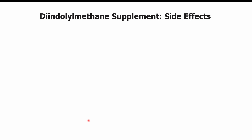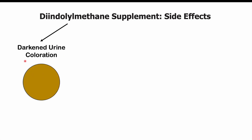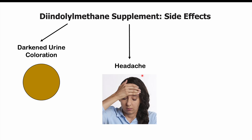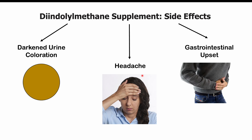Taking DIM supplements can cause side effects, especially in those who take high doses. Some of these side effects include darkened urine coloration, headache, and gastrointestinal upset such as nausea, vomiting, and diarrhea. These signs and symptoms can occur in those who take DIM supplements, especially at higher doses.